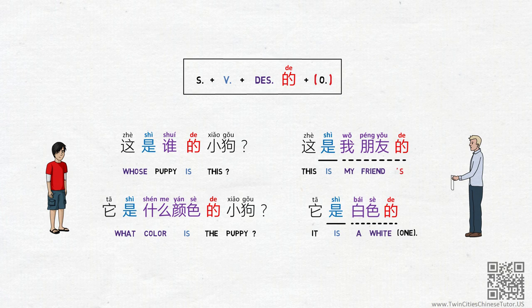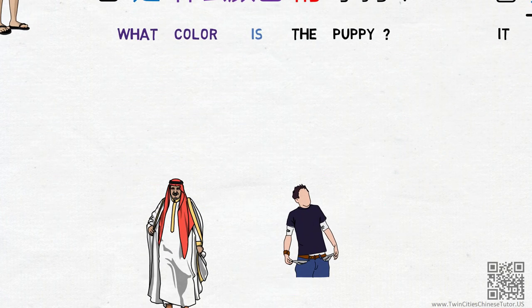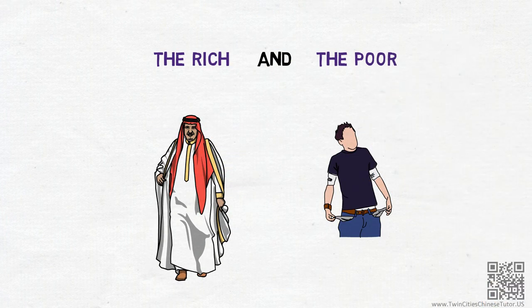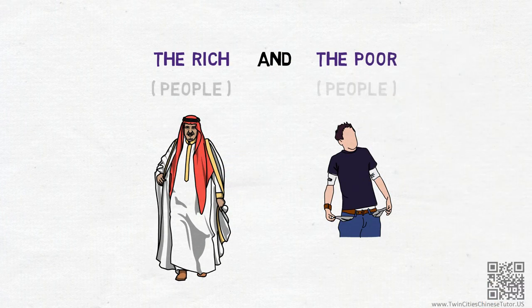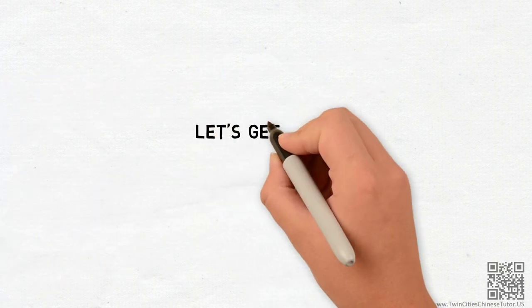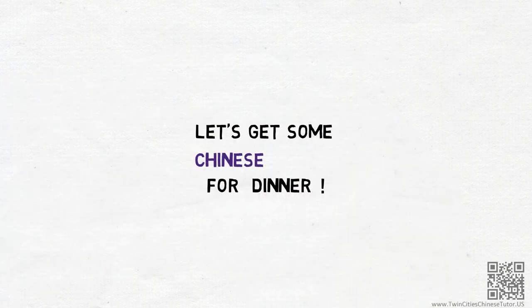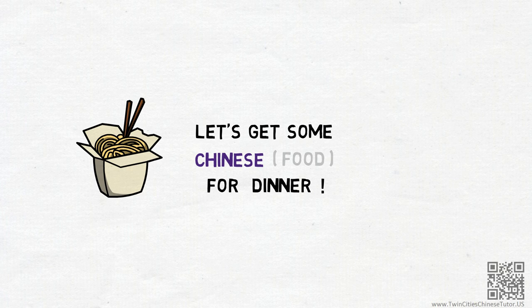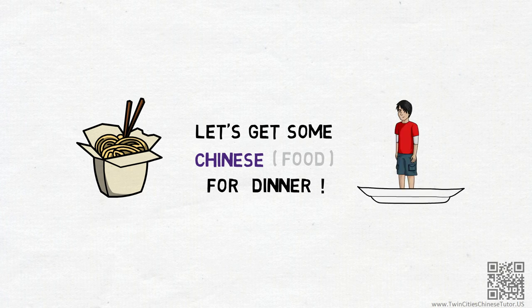Actually, English speakers do the same thing in English. When we say 'the rich and the poor,' we're omitting the noun 'people.' When we say 'let's get some Chinese for dinner,' we're omitting the object 'food.' I'm sure you don't eat Chinese people for dinner, right?